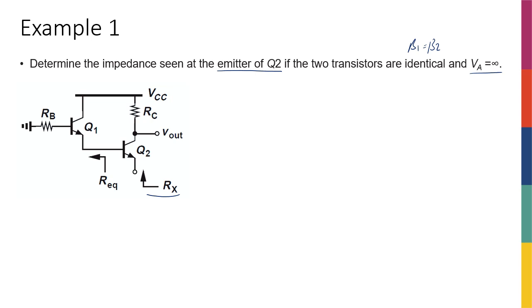So instead of, actually by the way, when I say Rx looking into the emitter of Q2, it means that if I draw a circle around this entire circuit and want to replace the whole thing, I'm going to keep the terminal and replace the whole thing with one resistor to ground.